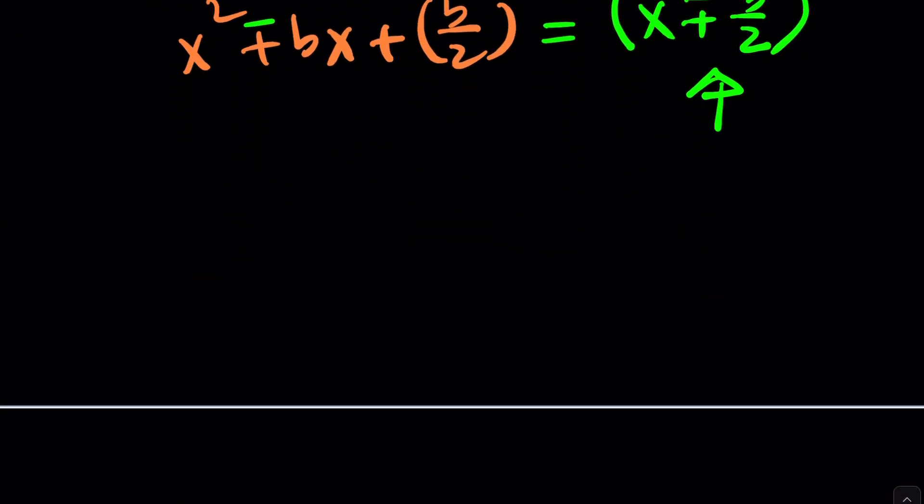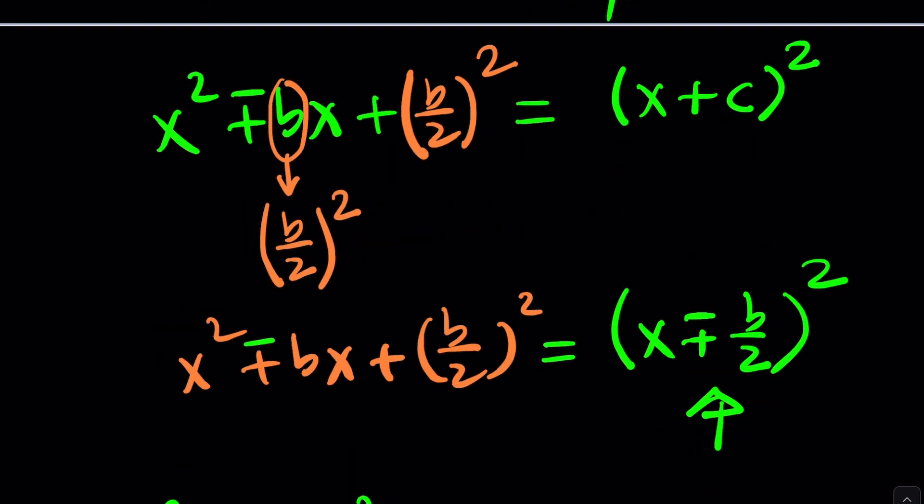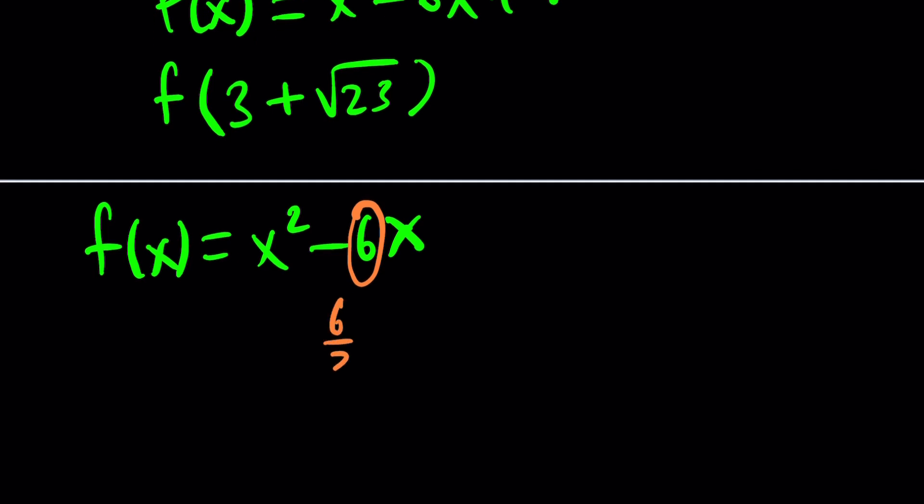Let's apply it to our scenario. f of x equals x squared minus 6x plus 1. And then I'm supposed to evaluate f of 3 plus root 23. Here's how we're going to apply completing the square to the right-hand side. We have x squared minus 6x. What number should I add to this to make the right-hand side a perfect square? And that you can find by cutting the 6 in half, squared.